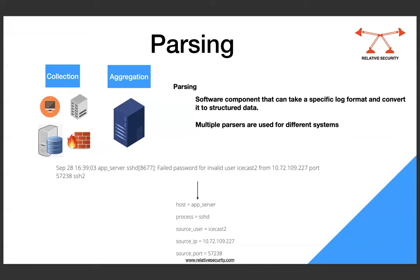The job of the parser is to extract the data from those log lines and map them according to their value to event fields. For example, app server is the host, the process is SSHD, source user would be icecast, the source IP is 10.72.2.19, and the source port is 57238. So the parser extracts and maps all that raw data into structured, labeled fields.